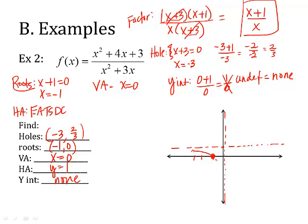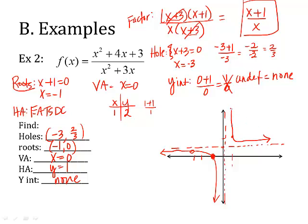So the curve comes down like this, cutting the asymptotes. On the right side, I need to pick a point — let's use x equals 1 and plug it into my equation. I get 1 plus 1 over 1, which is 2, positive. If y equals 1 is the asymptote and y is 2 here, then my curve is up above the asymptote.